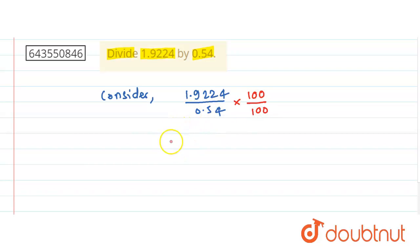So this is 192.24 divided by 54. This is simply 192.24 divided by 54. And if you take the division,